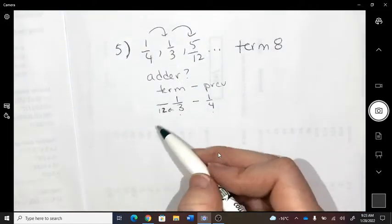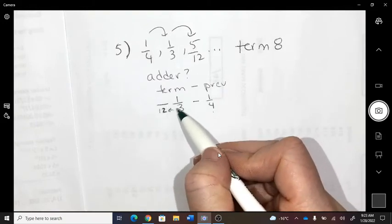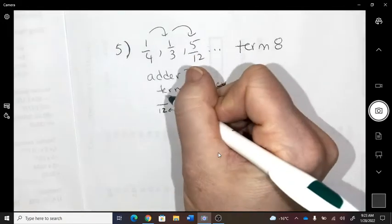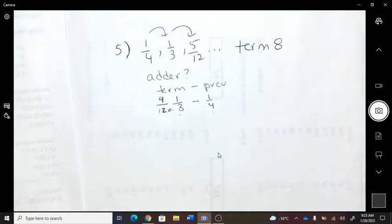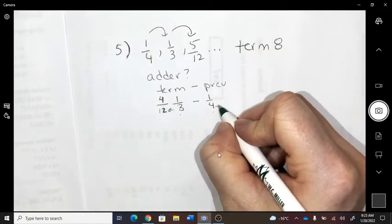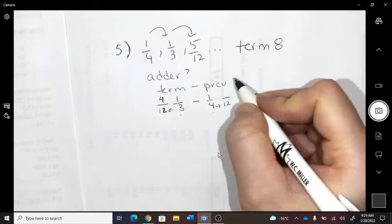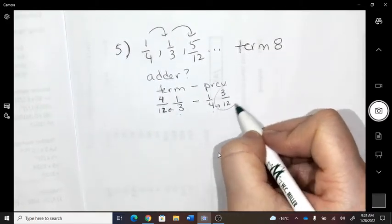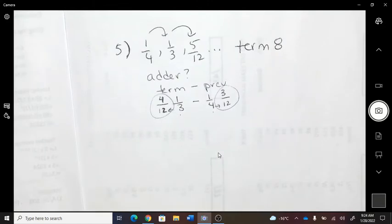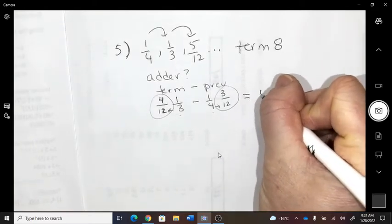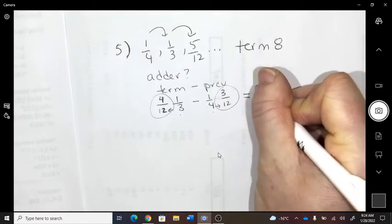Okay, but if I turn the three into a 12, that's a times by four. So I'm going to turn the top into a four. On this one, I would have to times by three. So now I can subtract them. So four twelfths minus three twelfths makes one twelfth.